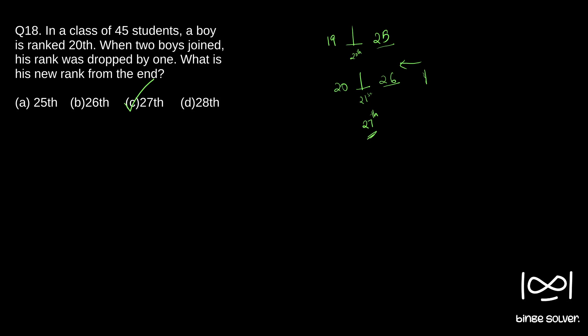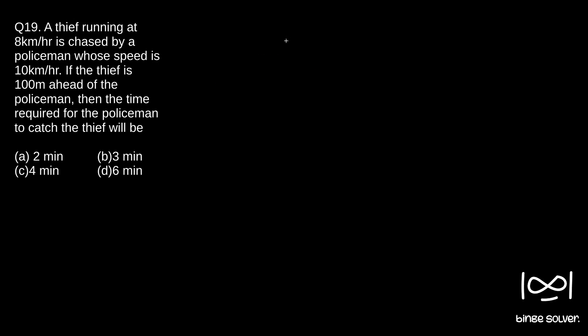Taking up question 19: a thief running at 8 kilometers per hour is chased by a policeman whose speed is 10 kilometers per hour. If the thief is 100 meters ahead of the policeman, what is the time required for the policeman to catch the thief? Let me show what is given.